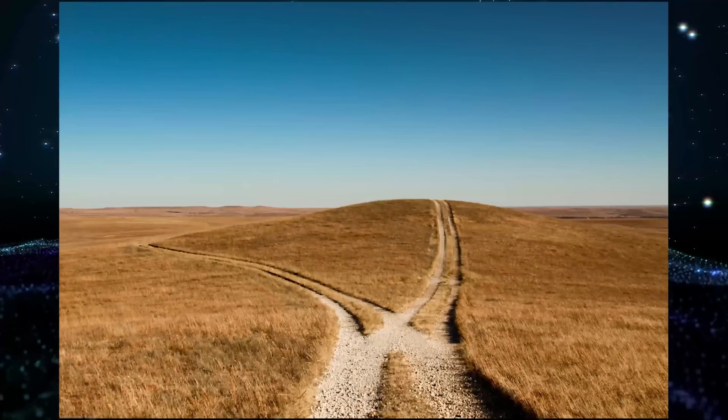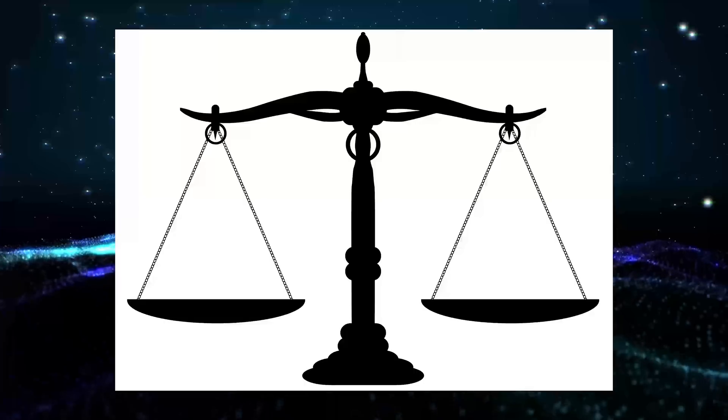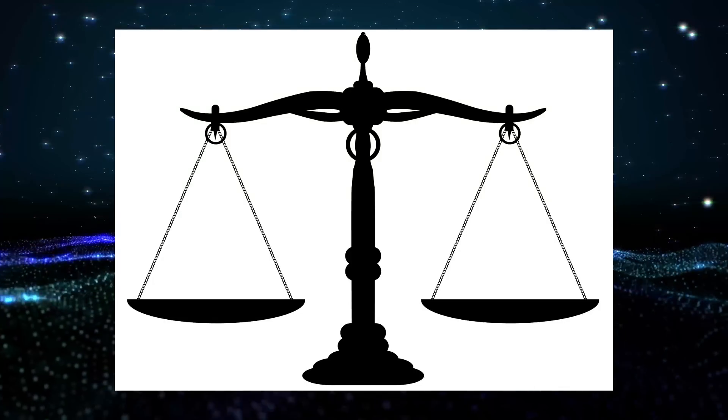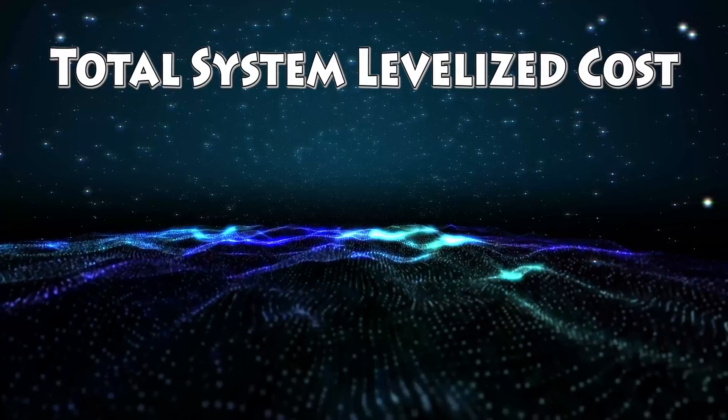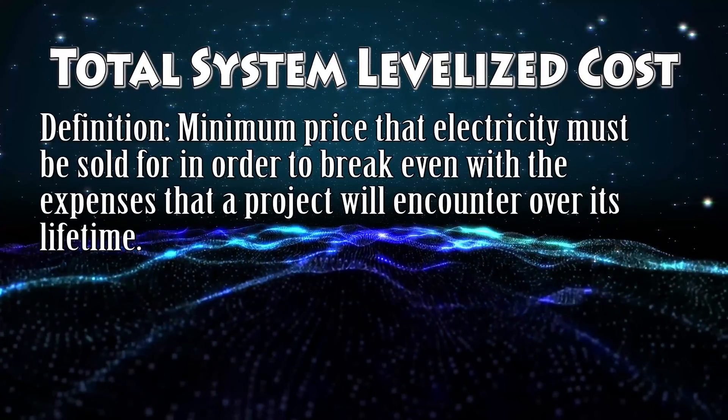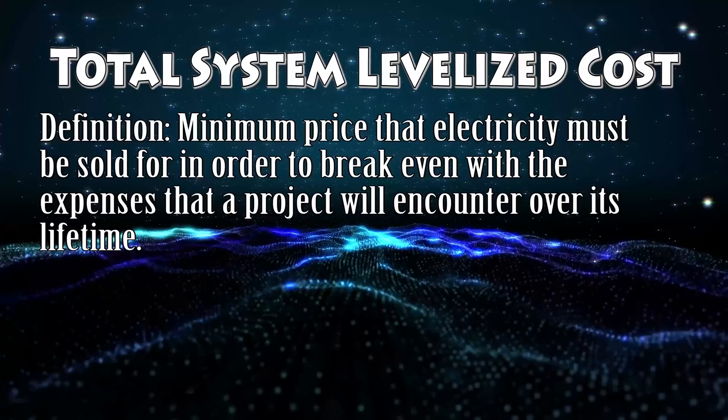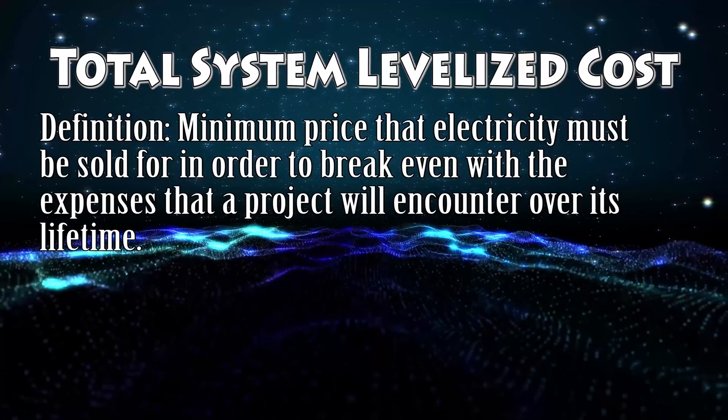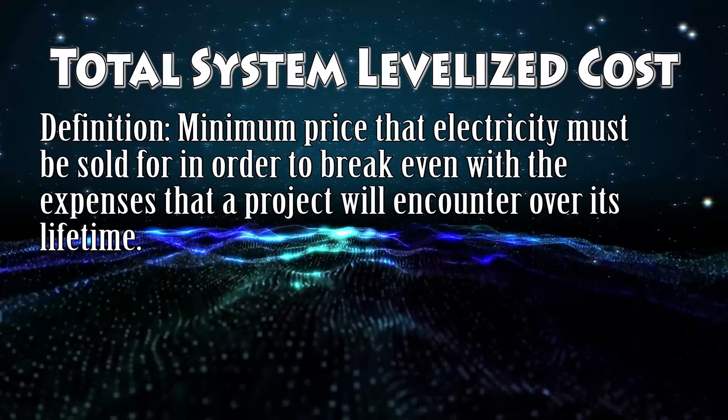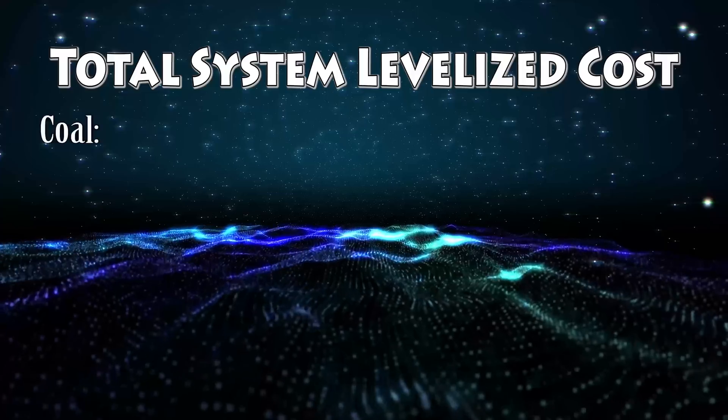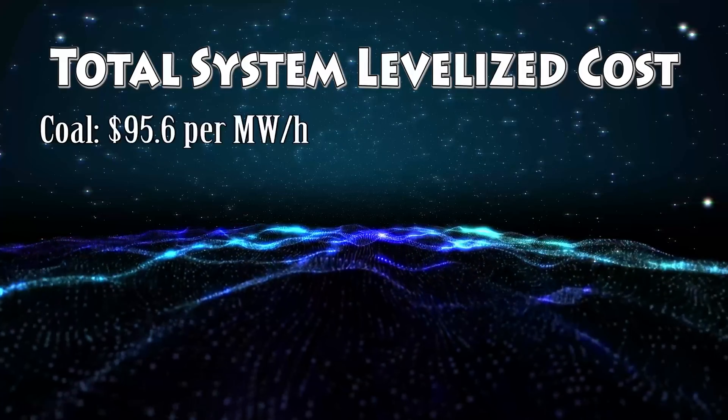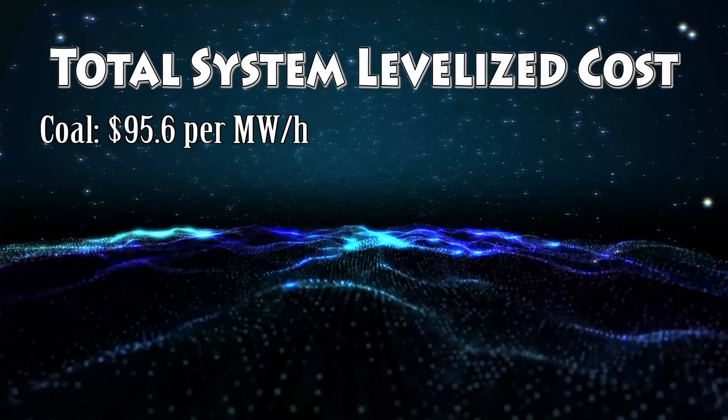As it turns out, there are quite a few options. To compare these energy sources, I'm using something called the total system levelized cost. This is the minimum price that electricity must be sold for in order to break even with the expenses that a project will encounter over its lifetime. For reference, coal has a levelized cost of $95.6 per MWh.